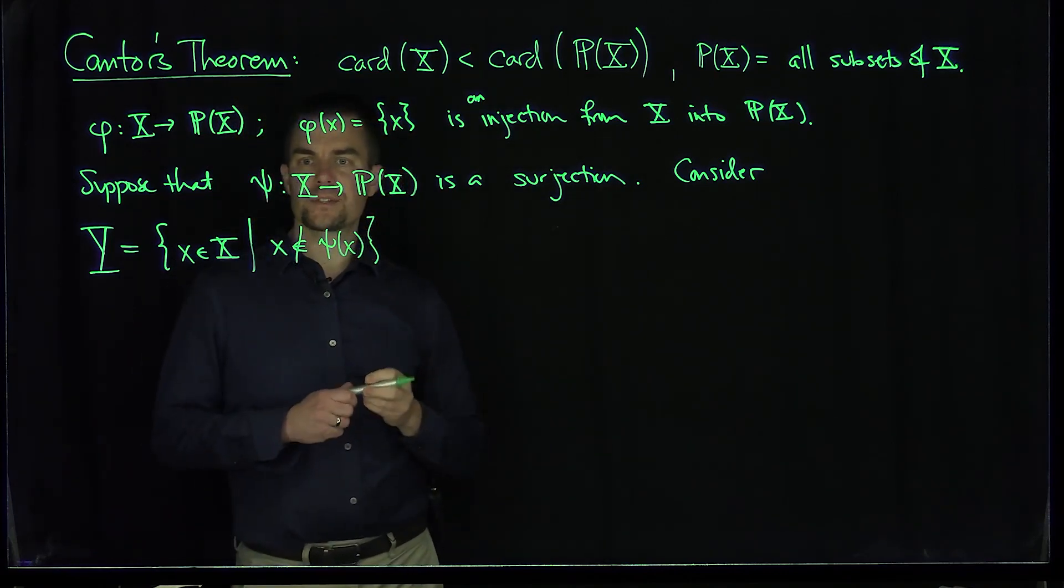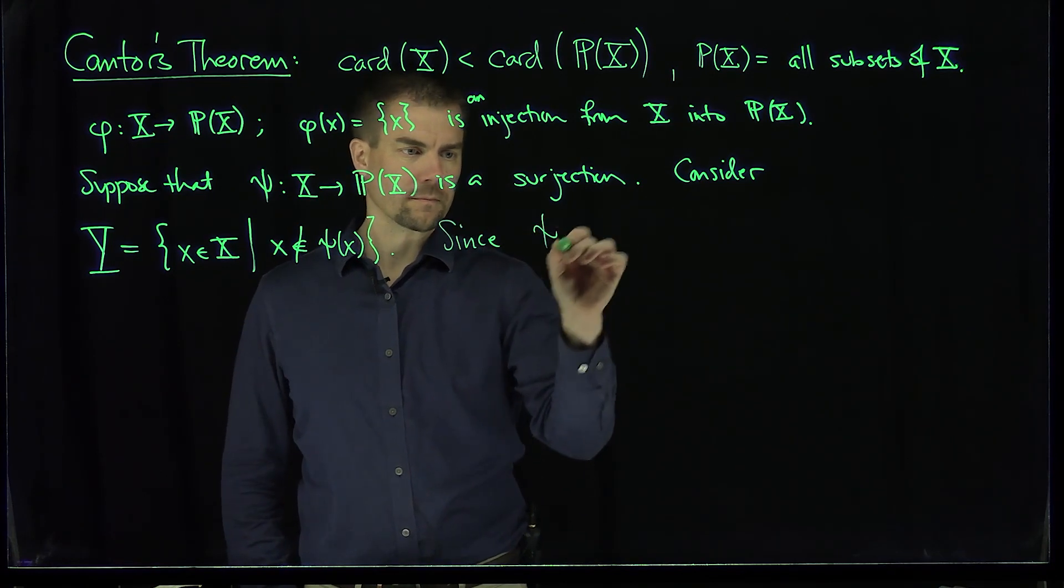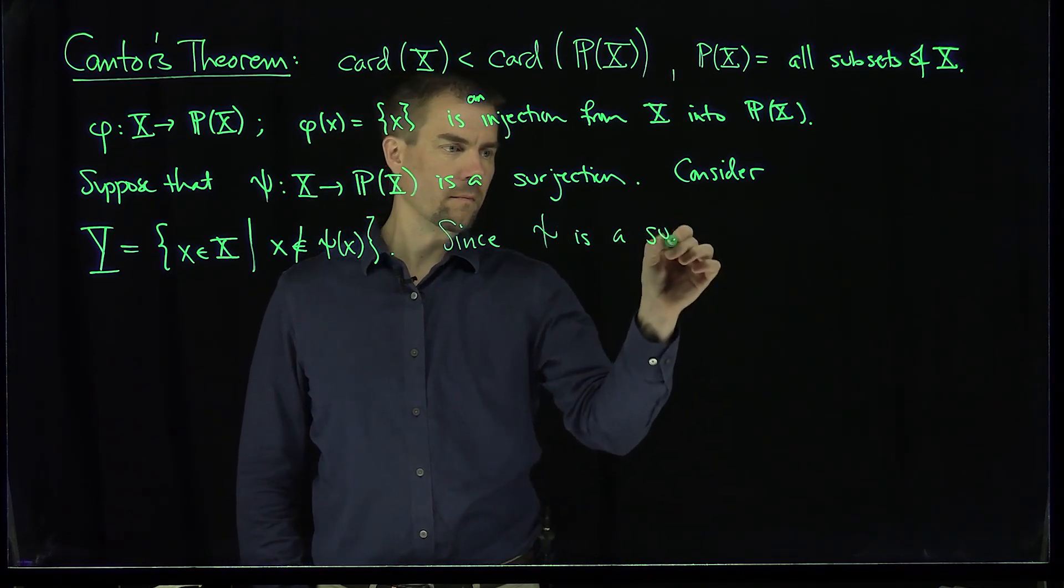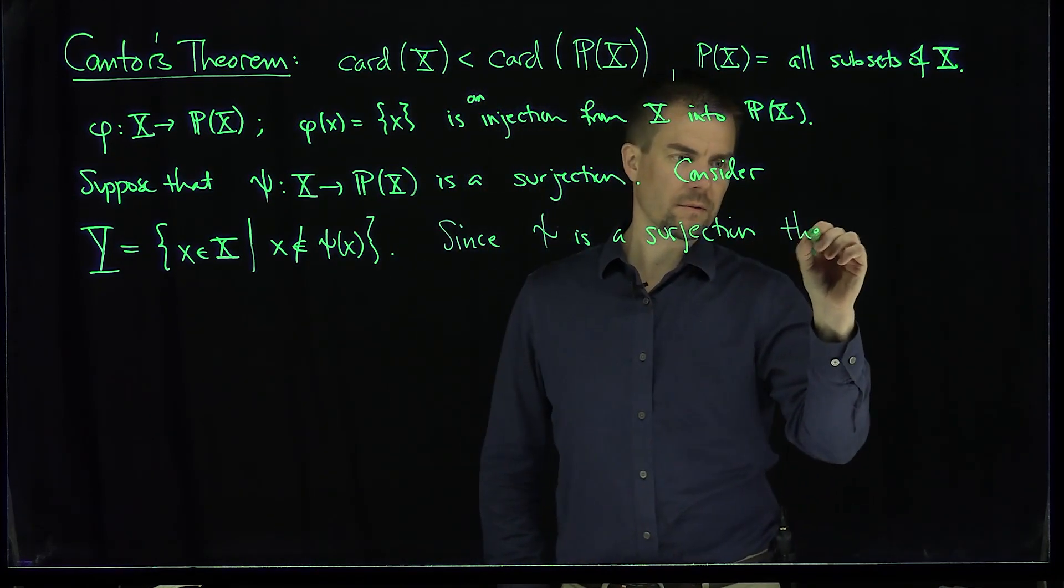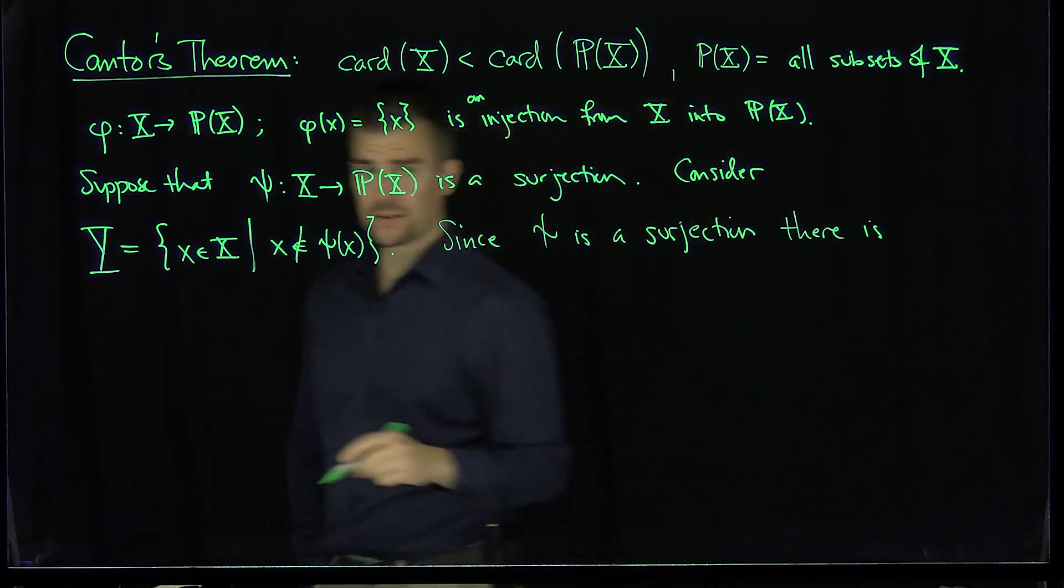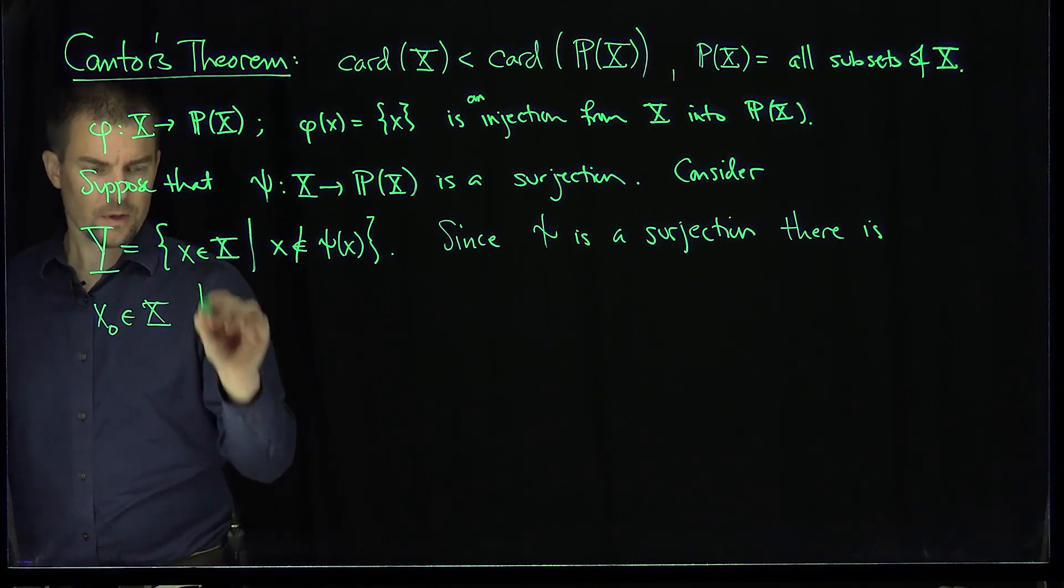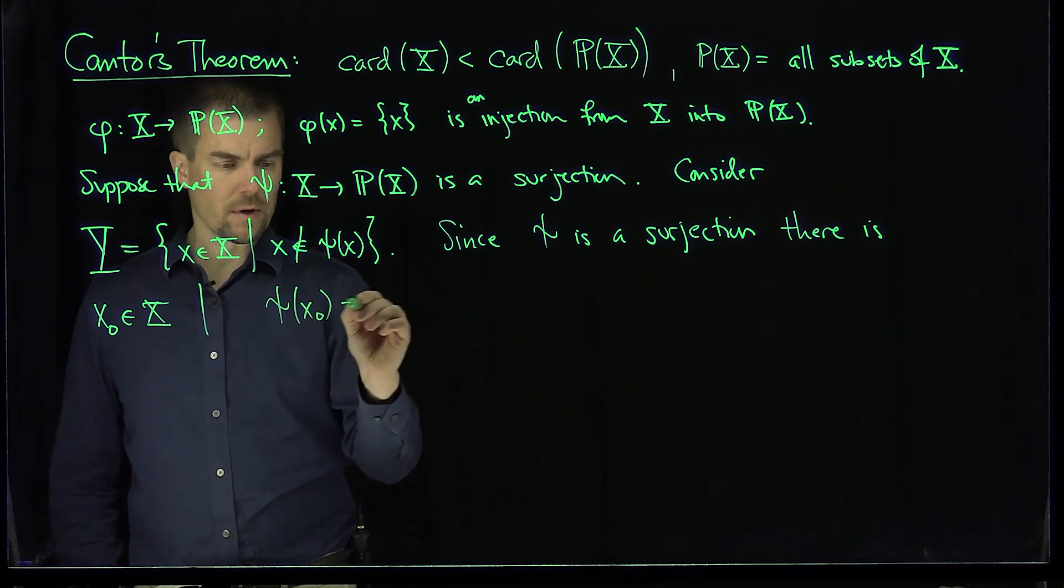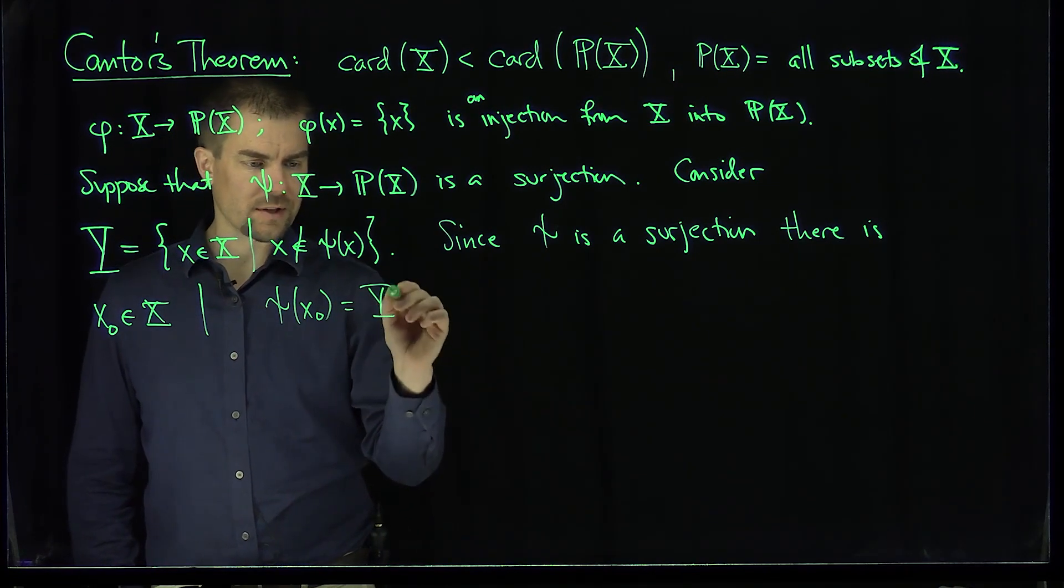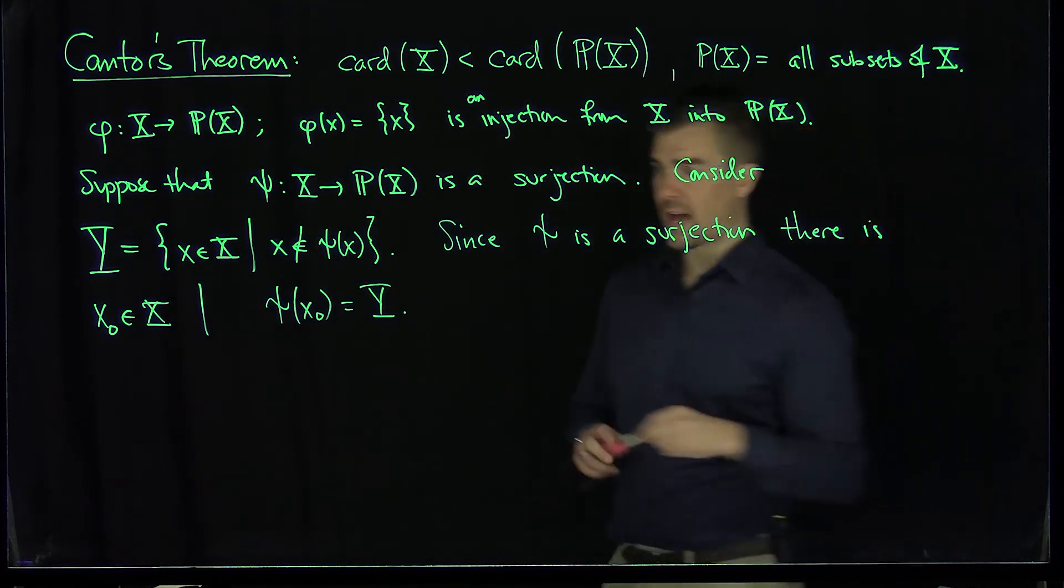Now we know that since Psi is a surjection, there is an X0 in X such that Psi of X0 is equal to this set Y. And so now what can we say? There's two things that can happen.